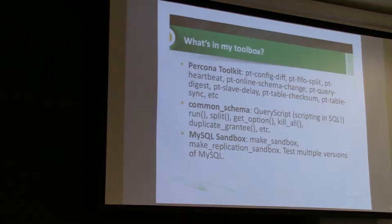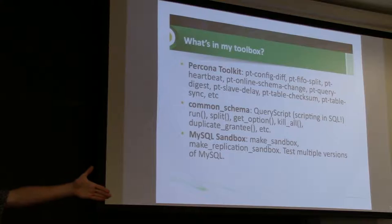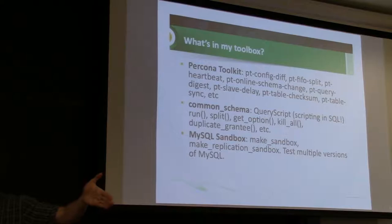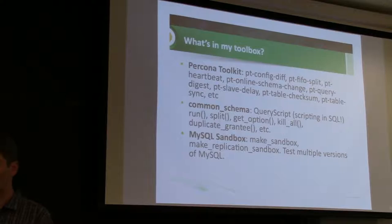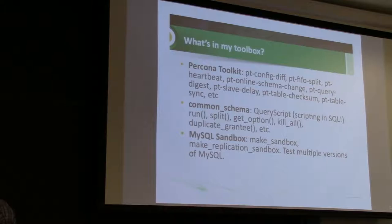pt-query-digest is good for looking at slow query logs. pt-slave-delay is one I used to use but don't need anymore — it's for intentionally delaying a replica. For disaster recovery, you might want a copy of your production database that's seven days old, storing up binary logs so you can fast-forward to a certain point in time. The reason I speak in the past tense is that in MySQL 5.6, which I've recently upgraded to, there's native functionality where you can set master_delay and specify how many seconds you want it to be behind. Most people probably aren't on 5.6 in production yet, but that's a nice little goodie when you get there.